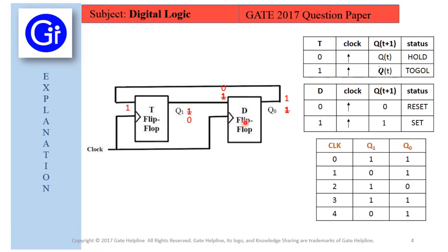We now send input to the D flip-flop from Q1 as 0, and from Q0 this 1 goes to the input of the T flip-flop. The T flip-flop with input 1 toggles, so Q1 (which was 0) becomes 1. The D flip-flop with input 0 resets, so Q0 (which was 1) becomes 0. After the second clock cycle, outputs are Q1=1 and Q0=0.